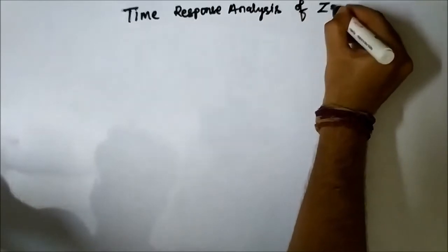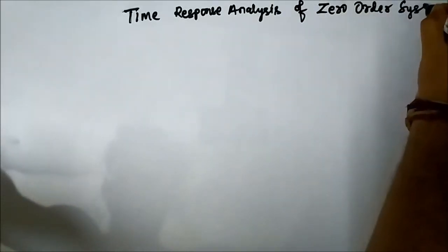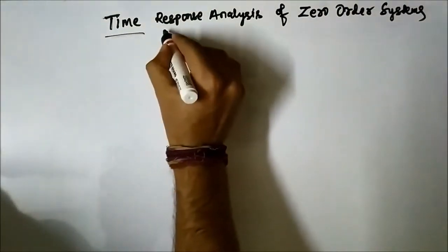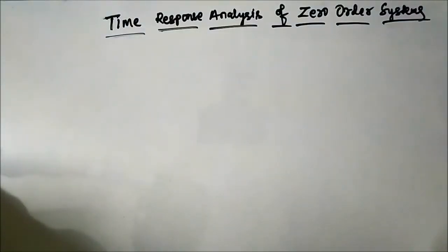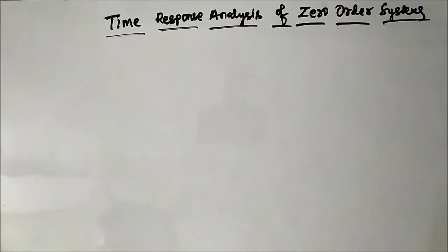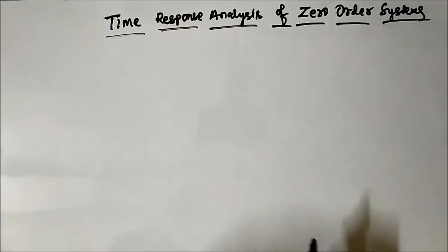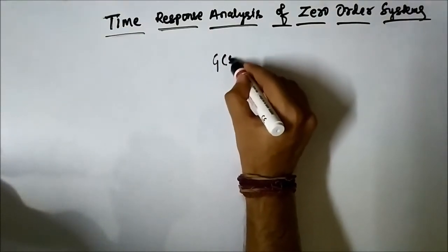of a zero order system. We have already discussed the definition of order of a system. I have posted separate videos related to type and order of a system, so please check those out. Again, the order of a system is the highest power of s in the characteristic equation, or in the closed loop transfer function of a system.